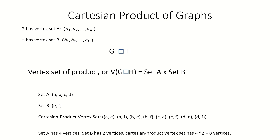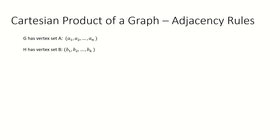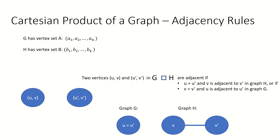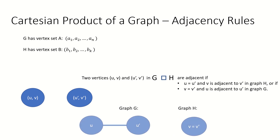We define the connections between vertices in the Cartesian product graph as follows. Suppose we have two vertices in the Cartesian product of graphs G and H — let's call these vertices (U, V) and (U', V'), where U and U' are vertices from graph G and V and V' are vertices from graph H. These two vertices are adjacent if they satisfy either of two rules: either U equals U' — that is, they are the same vertex in graph G — and V is adjacent to V' in graph H; or V equals V' — that is, they are the same vertex in graph H — and U and U' are connected in graph G.